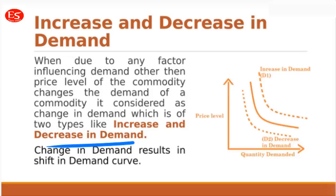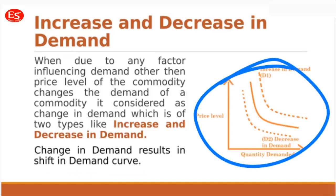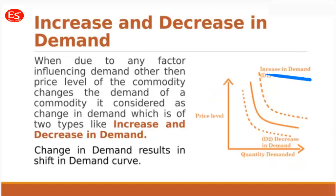This change in demand can be classified into two categories: increase or decrease in demand. Whenever demand changes due to factors other than price, the demand curve resultantly shifts — either to the right-hand side or to the left-hand side. Whenever increase in demand takes place, the demand curve shifts rightward; whenever decrease in demand takes place, the demand curve shifts leftward or inward.